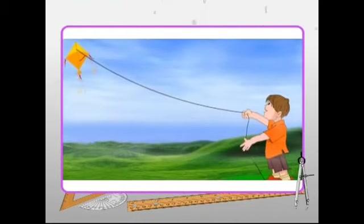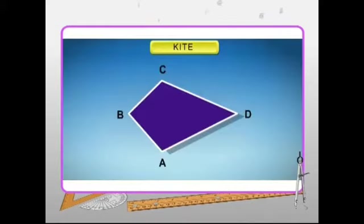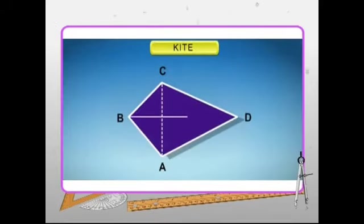Do you know what a kite is? Yes, the one flown in the air at the end of a long string. A kite is a quadrilateral with two pairs of equal adjacent sides. The figure shown here is a kite. In the figure, adjacent sides AB and BC are equal in length. Similarly, side AD is equal to side DC in length.